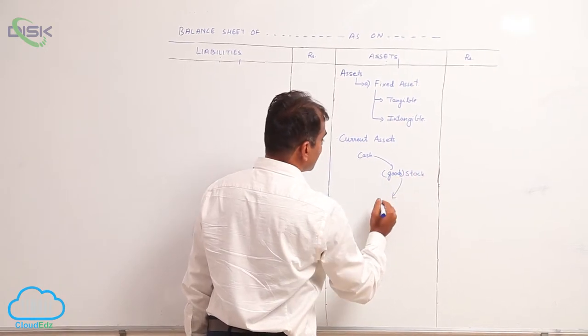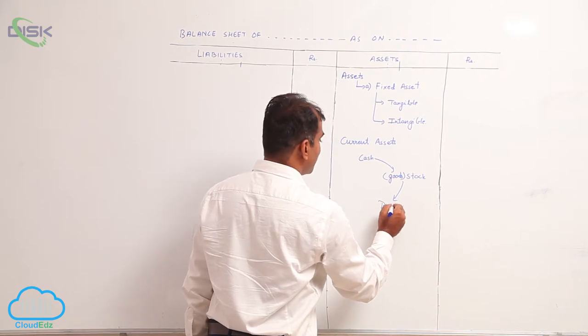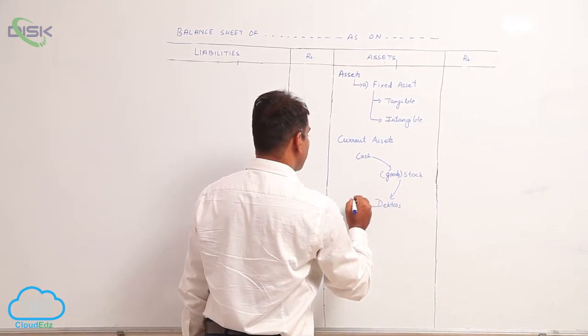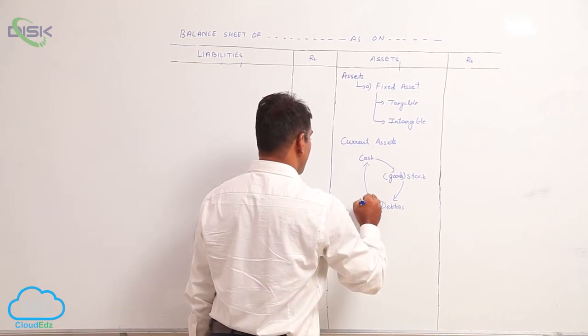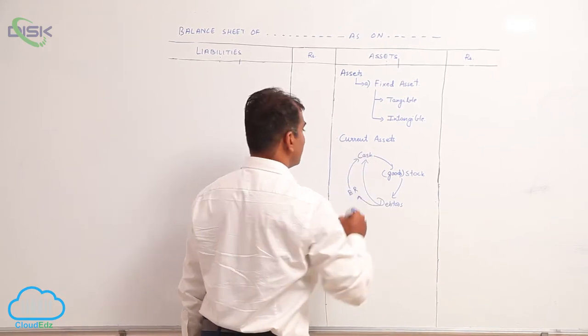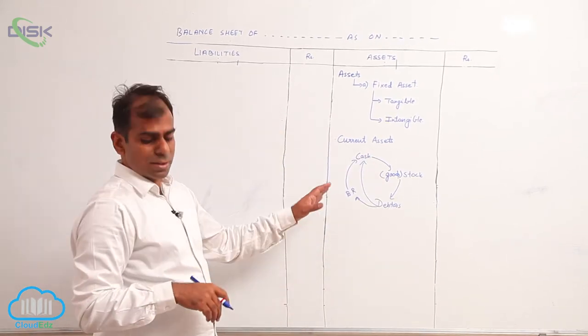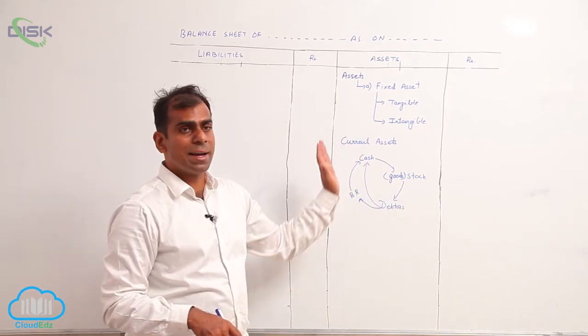Then you have stock getting converted into credit sale. Then credit sale can directly give you cash, or one more step we have bills receivable getting converted into cash. So these are the items we call current assets.